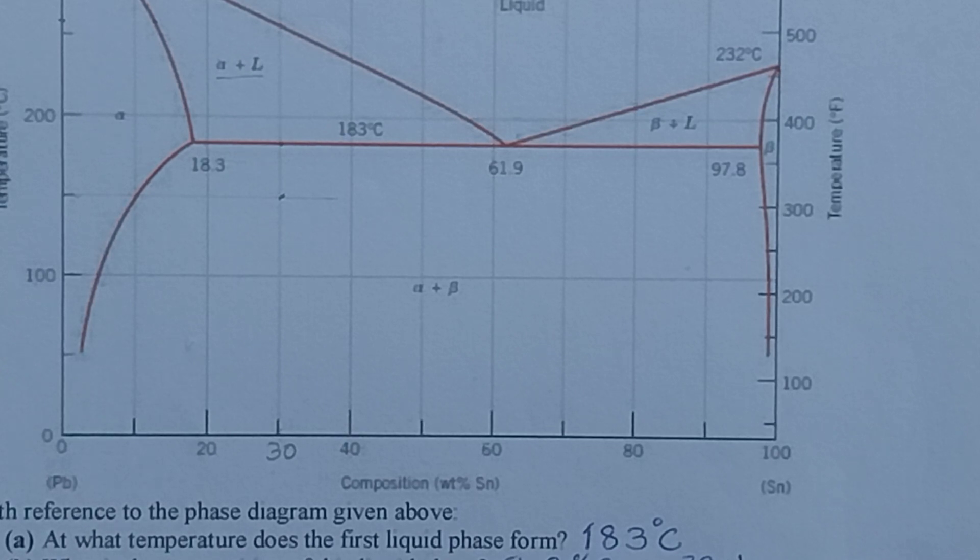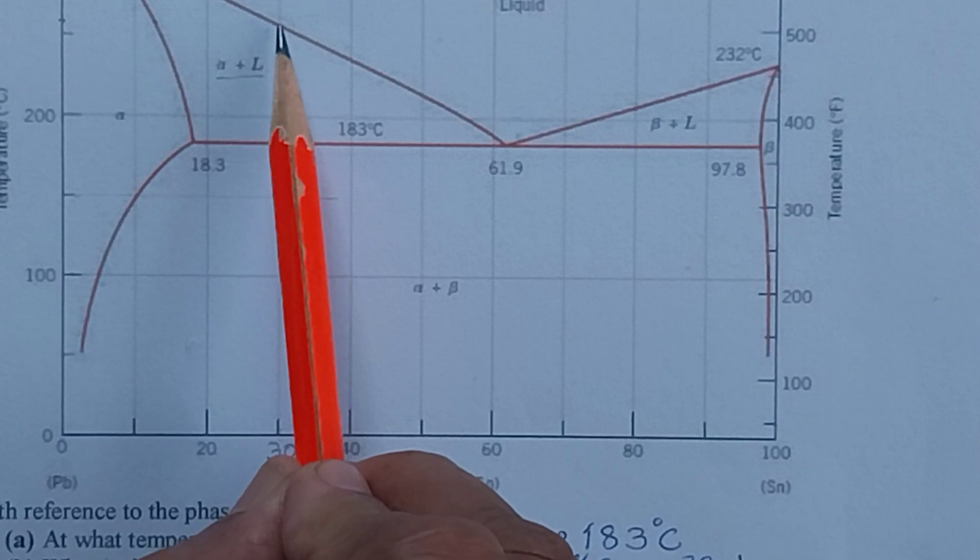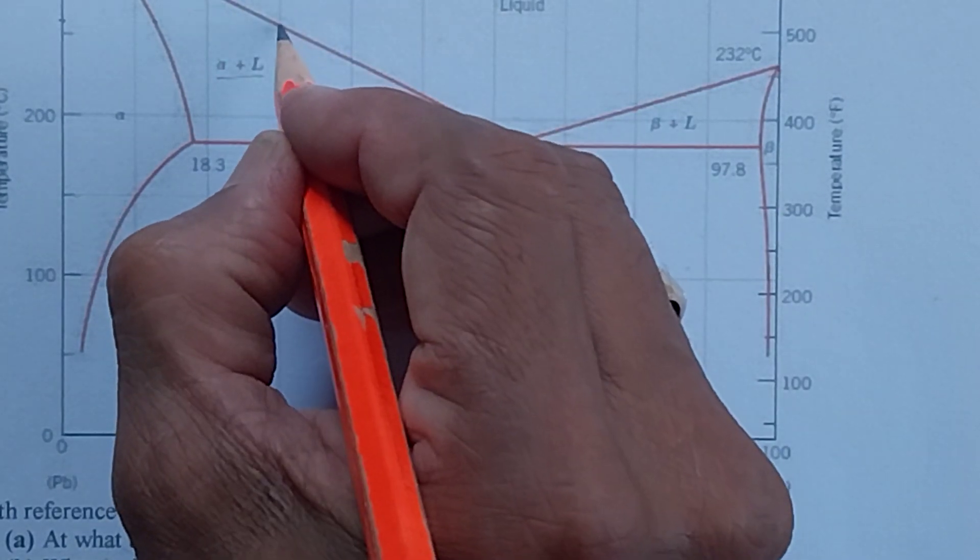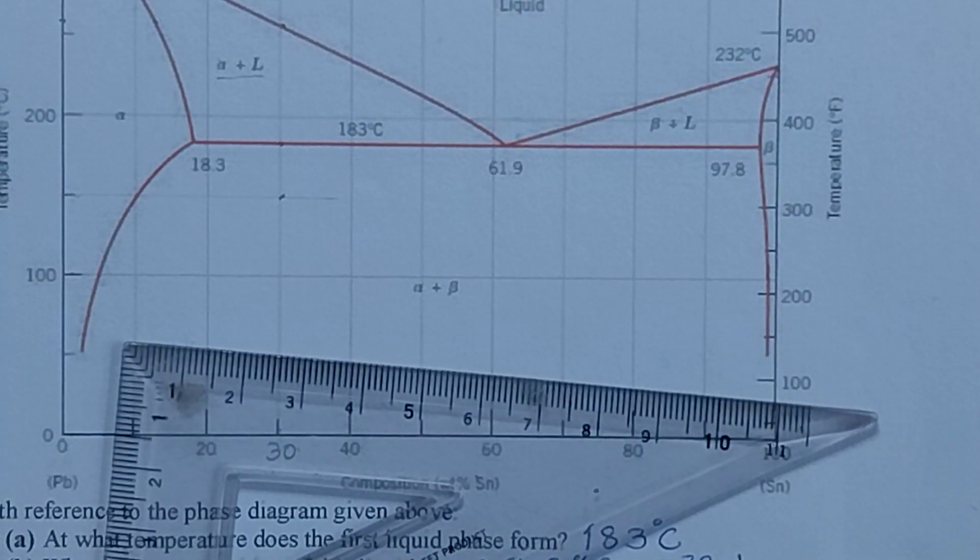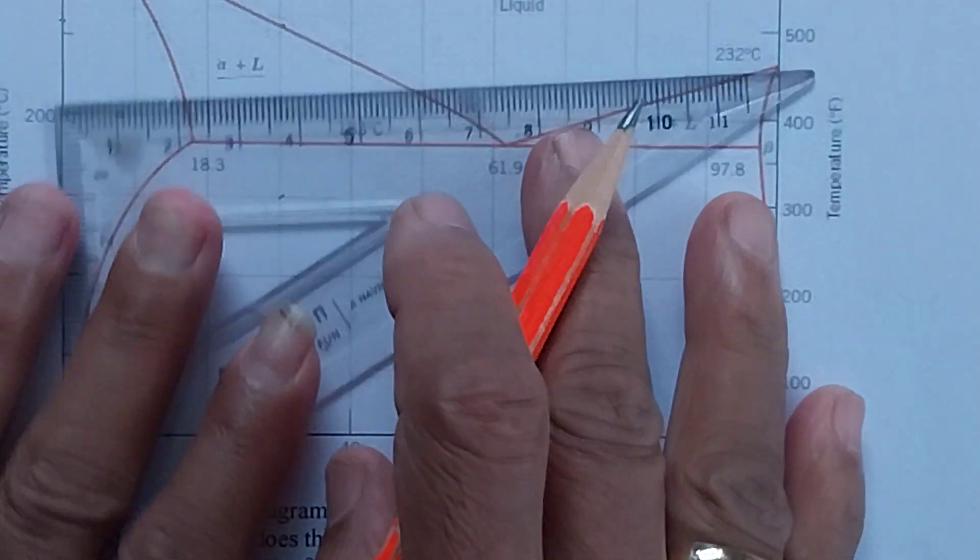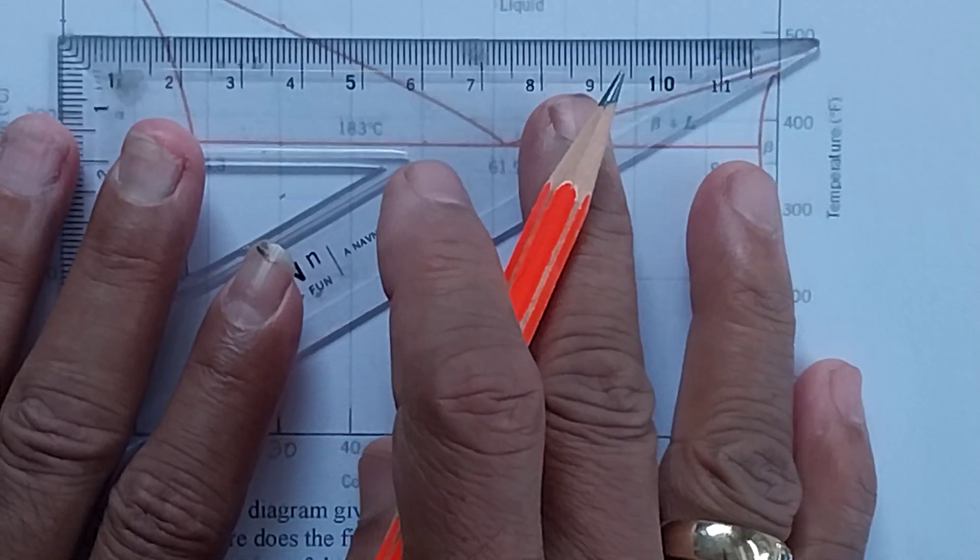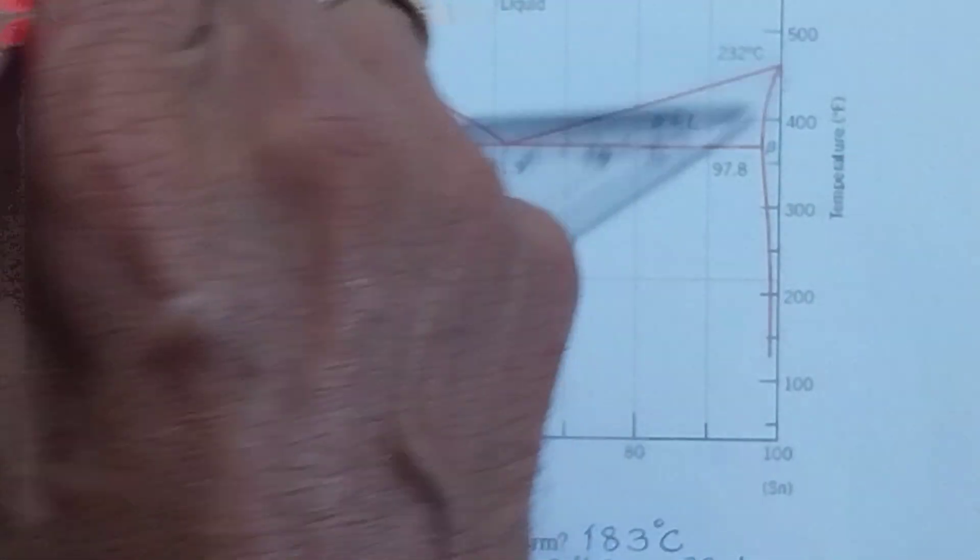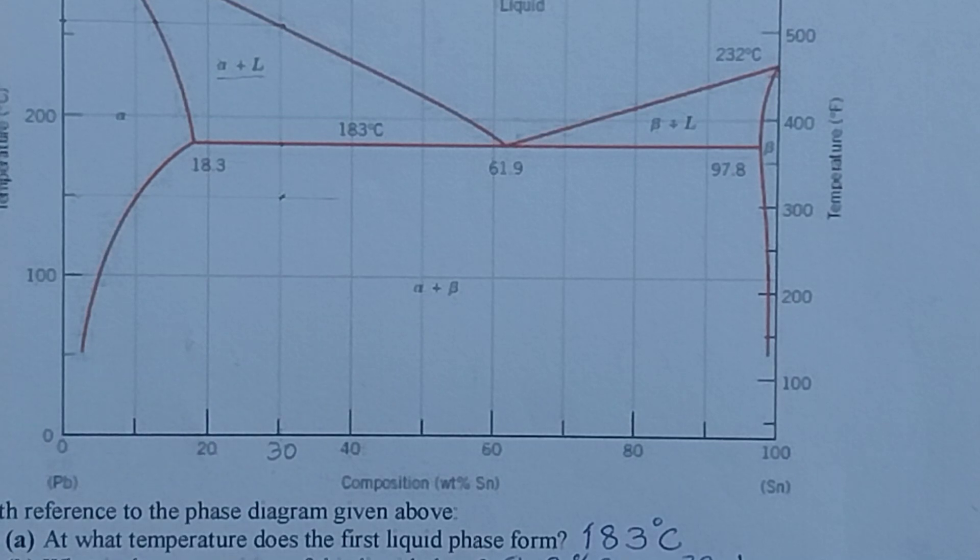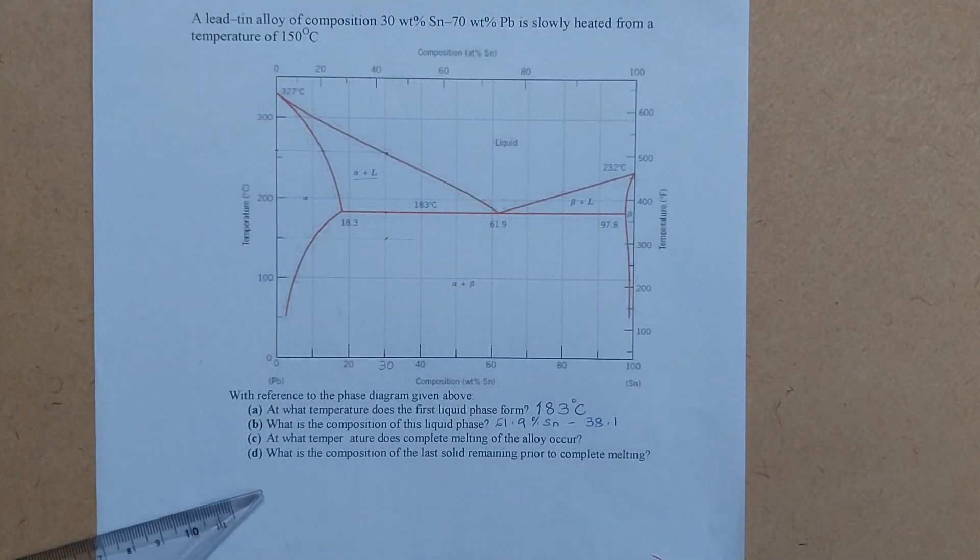Then at what temperature does the complete melting of the alloy occur? So when we follow this line, wherever this line hits the liquidus line, that is the point that we are looking at. And from that point, we drop a perpendicular on the y-axis. So here we drop a perpendicular on the y-axis, this is that point. And when you drop a perpendicular on the y-axis, this point.